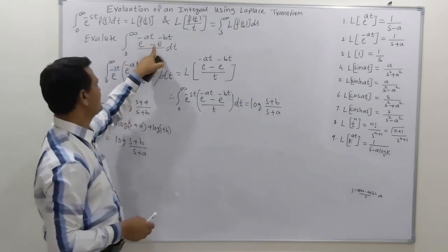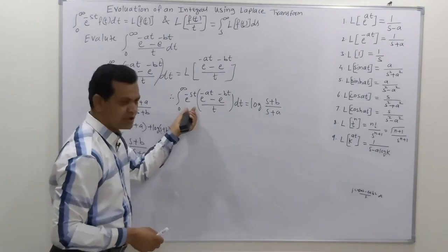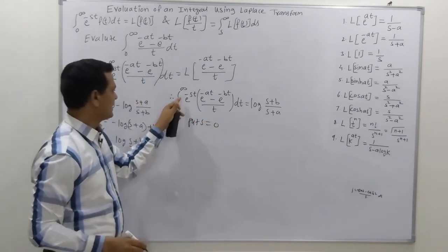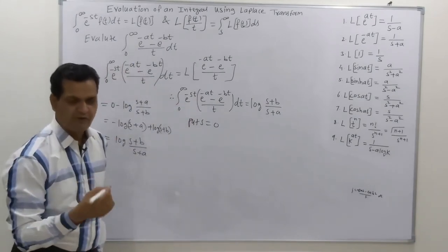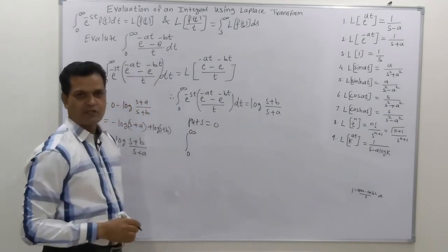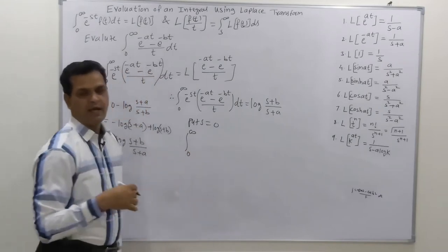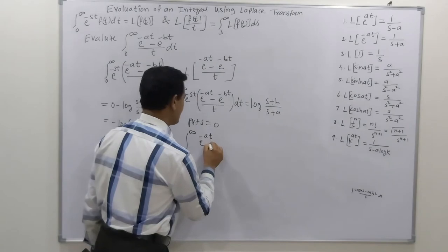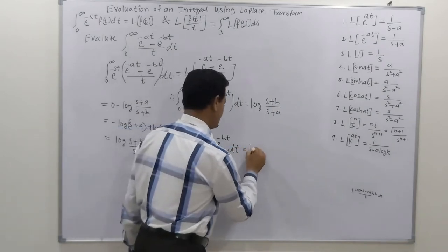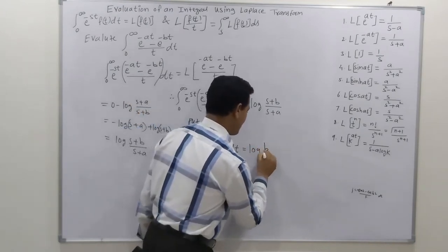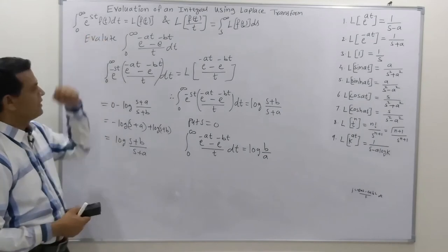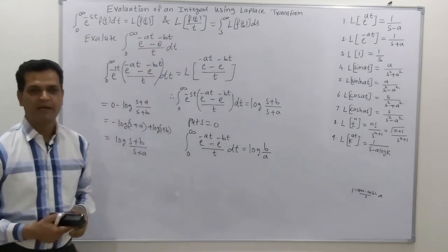Putting s = 0 on both sides: e^0 = 1, so ∫₀^∞ (e^(-at) - e^(-bt))/t dt = log(b/a). This is the final answer for example 1, obtained using the definition of Laplace transformation together with the effect of division by t property.